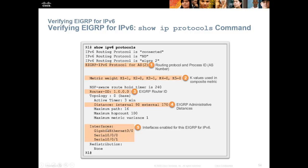And then what interfaces you're advertising networks on — nine times out of ten, your entry-level problems are all going to be on this page. You either have the wrong autonomous system number, or you're not advertising on the correct interfaces. Make sure you're not advertising interfaces you don't want to be advertising, and make sure you do advertise interfaces you do want to be advertising.